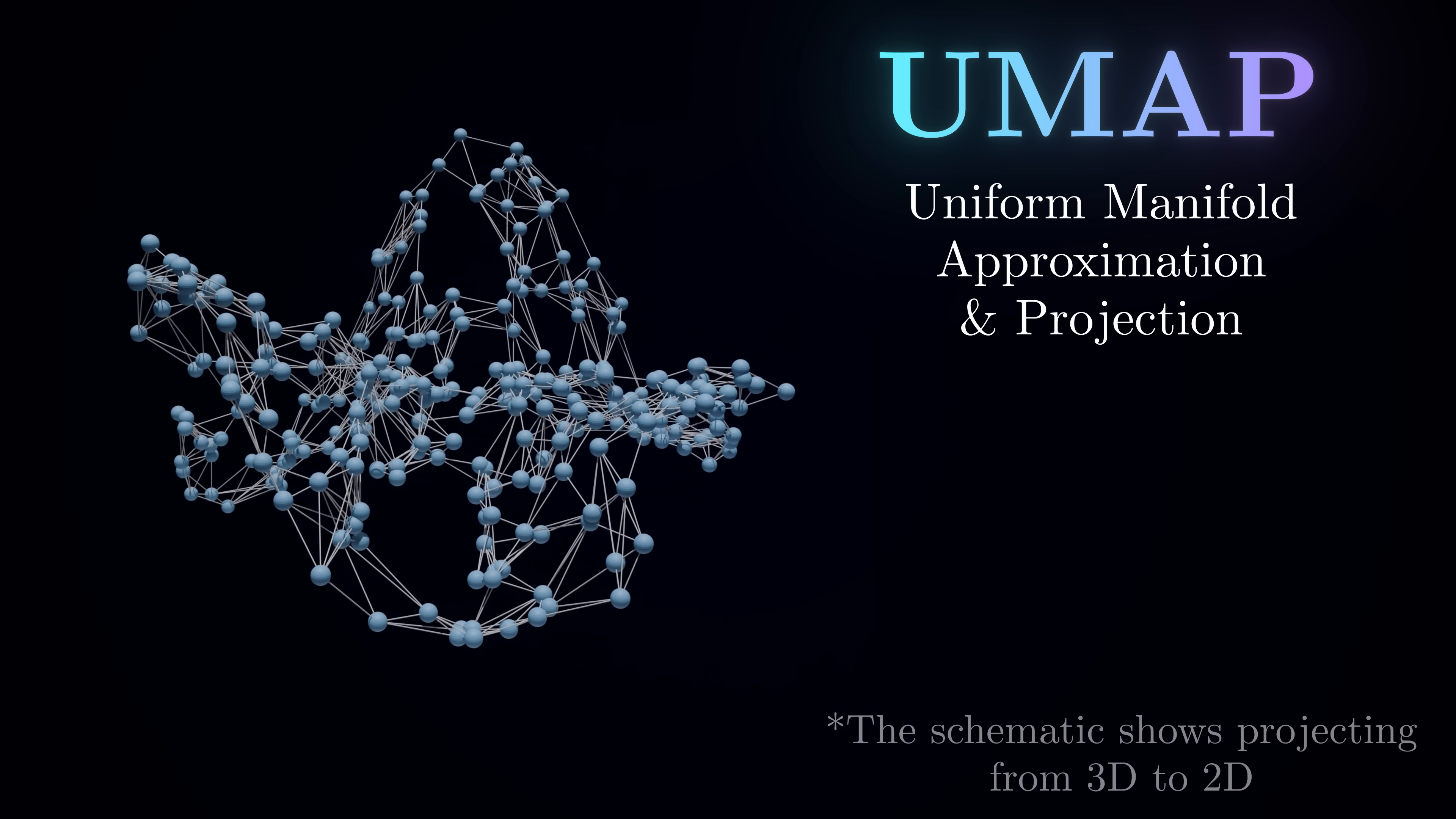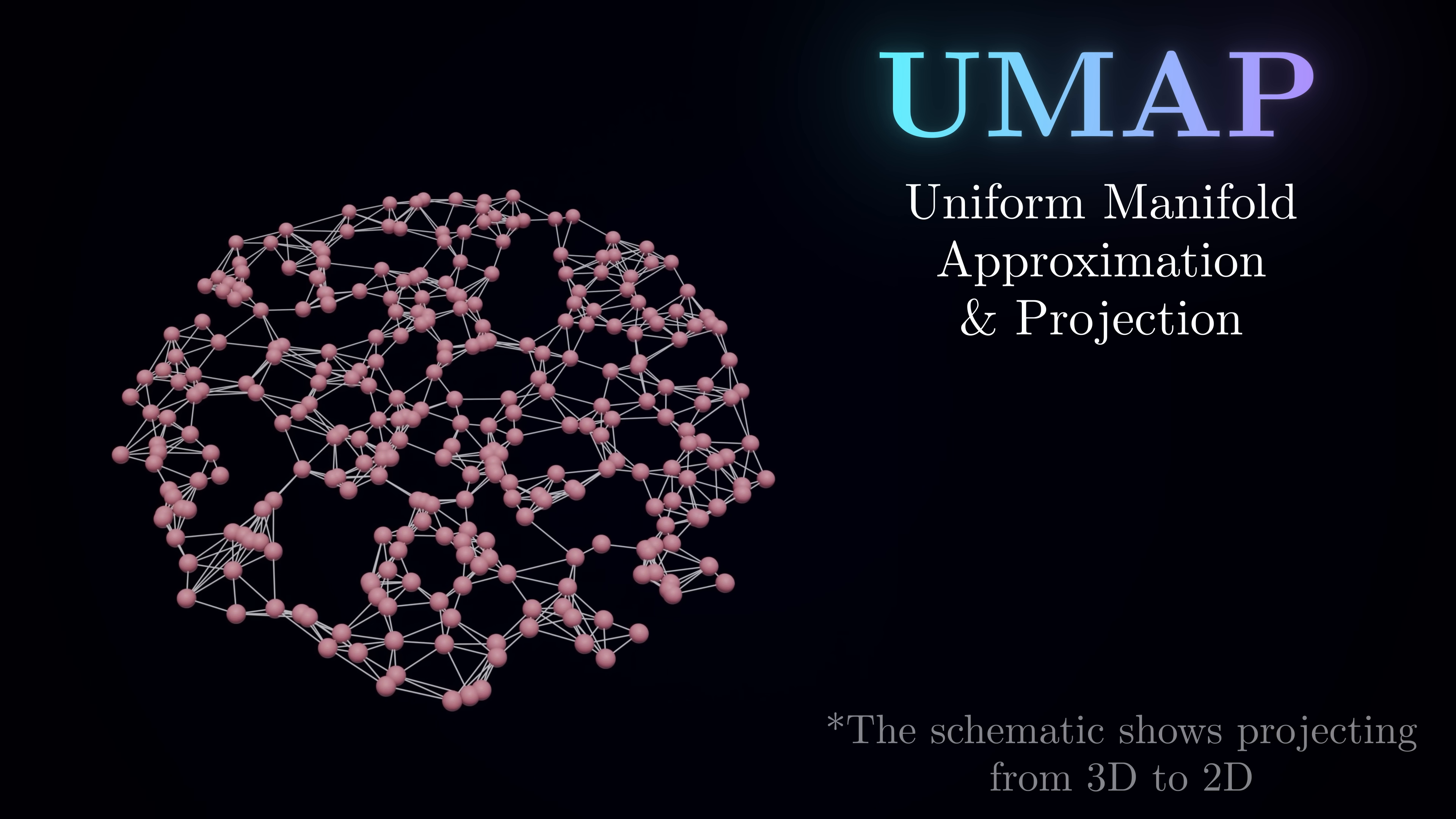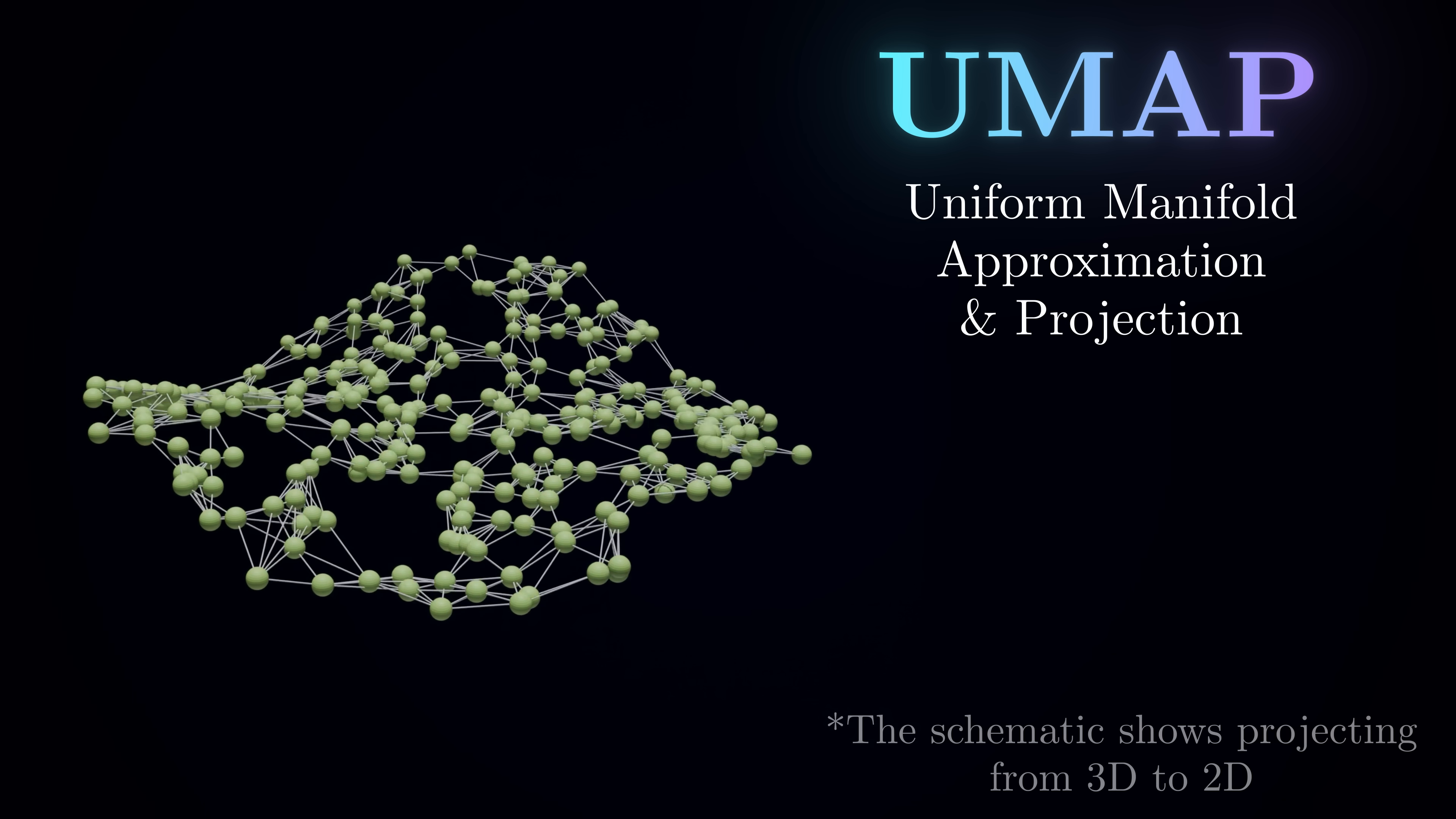UMAP searches for patterns of brain activity that cluster together. First, it identifies which patterns of activity are similar to each other in the original 400-dimensional space, creating kind of a graph of neural activity relationships. Then, it finds a way to preserve this graph structure while bringing the data down to just three dimensions that we can visualize. It's like carefully unfolding a complex origami structure to reveal the flat paper underneath. UMAP unwraps our neural manifold from 400 dimensions to 3, exposing the hidden structure in the brain's activity patterns.